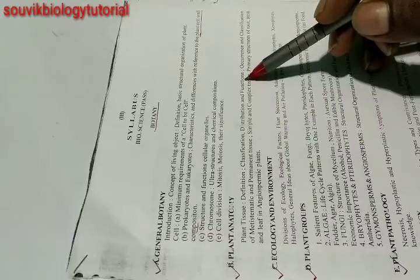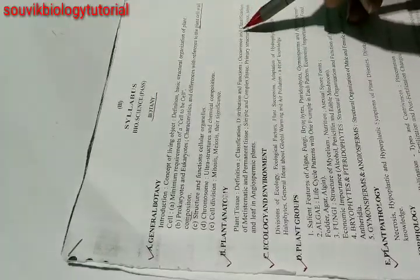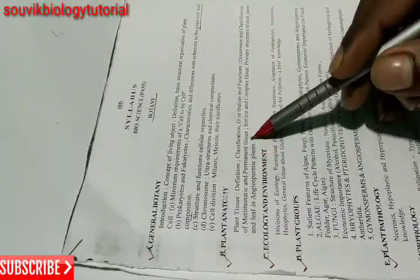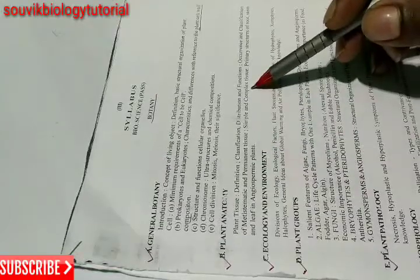Plant Anatomy: plant tissue definition, classification, distribution and functions, occurrence and classification of meristematic and permanent tissue (simple and complex tissue), primary structures of root, stem, and leaf in angiospermic plants.